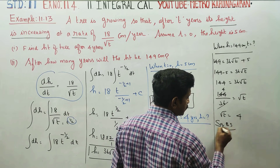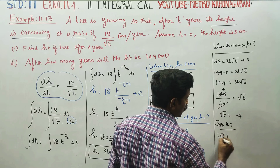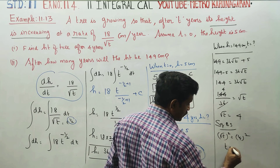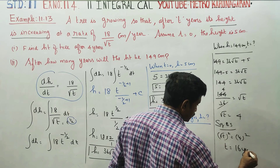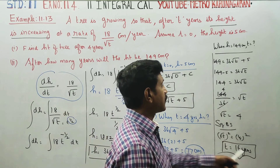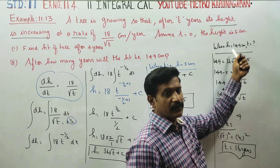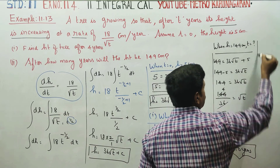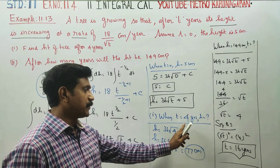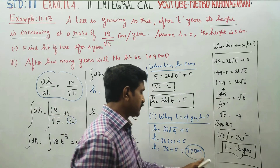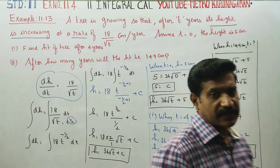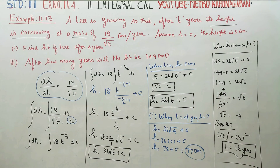Squaring both sides: t equals 16 years. So the height of the tree reaches 149 cm after exactly 16 years. Thank you.